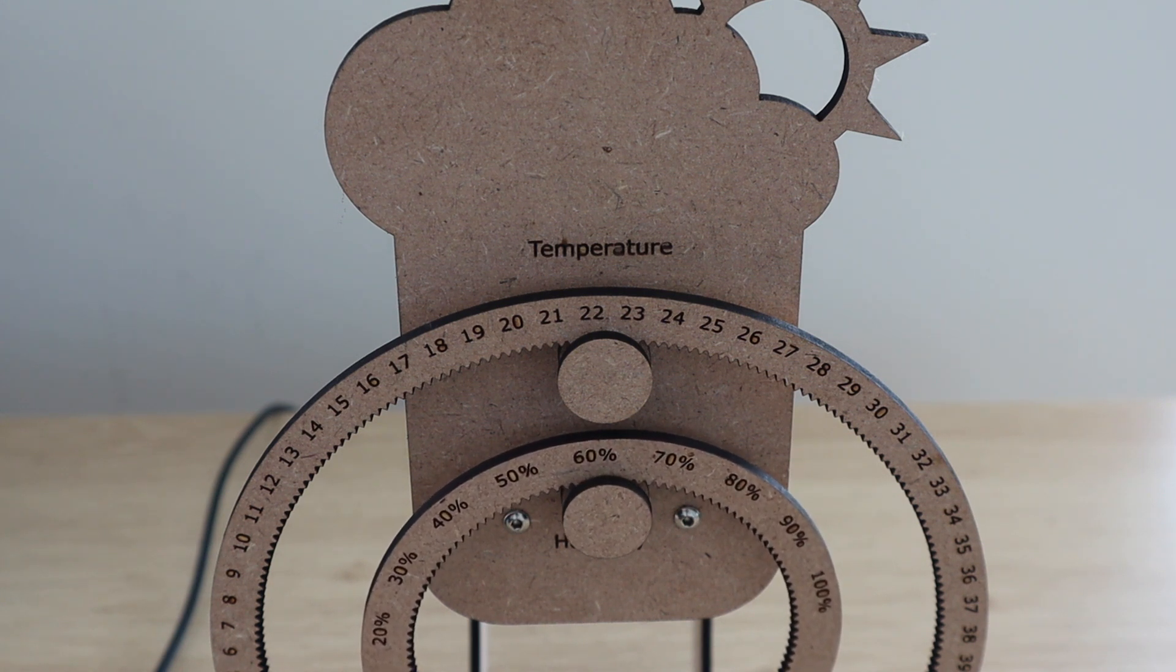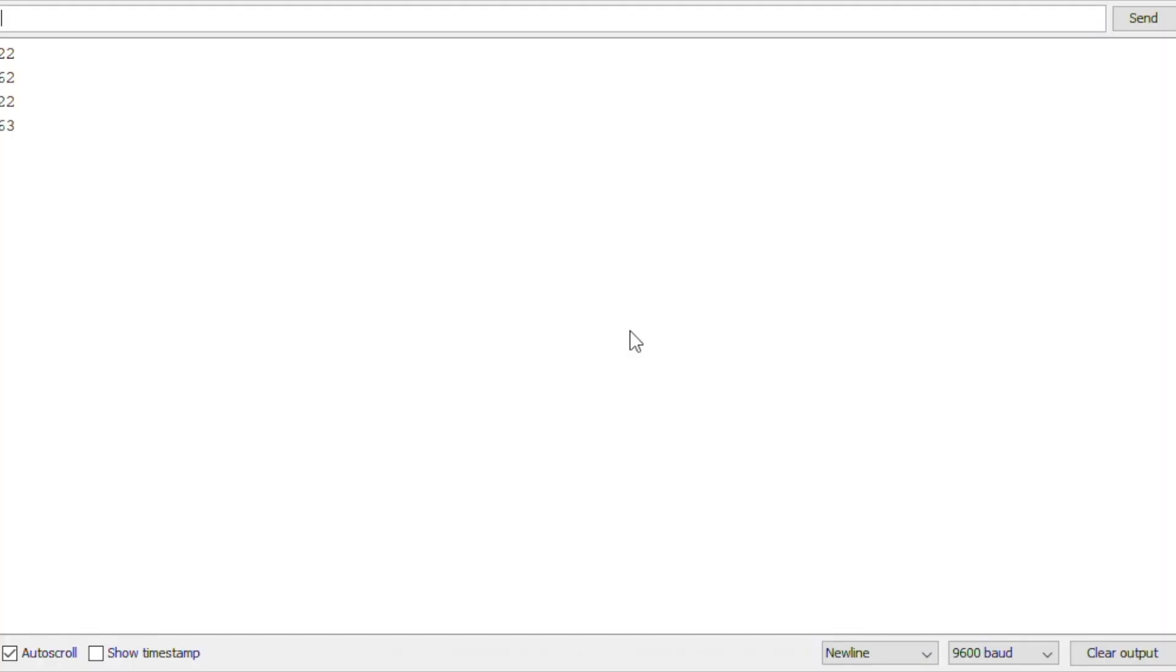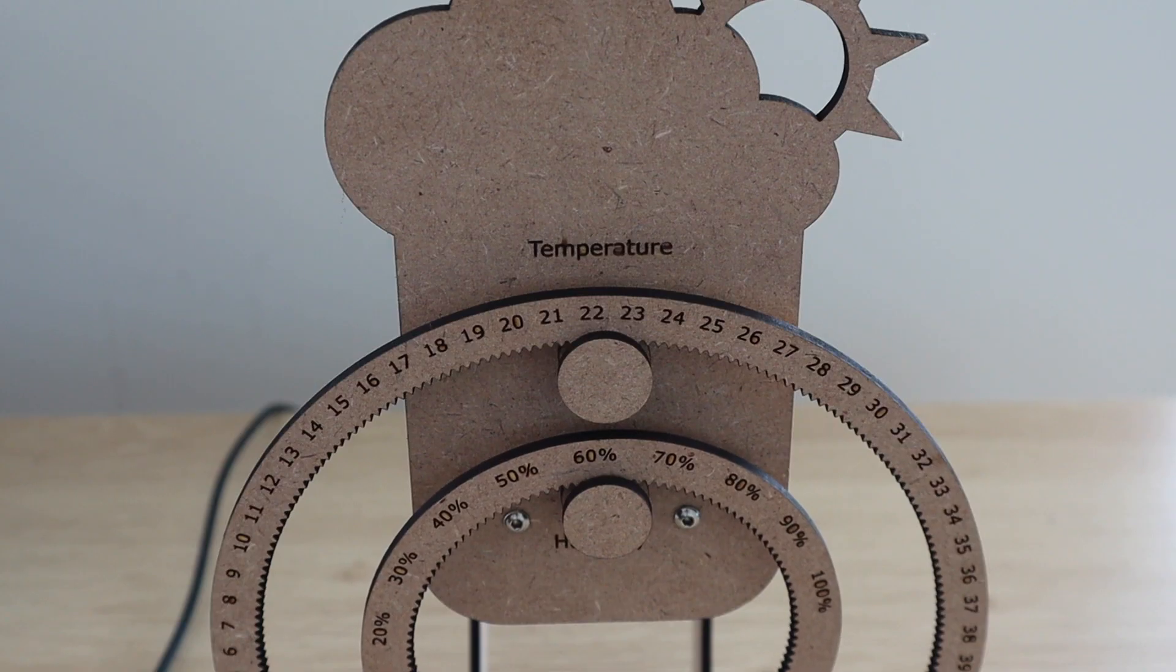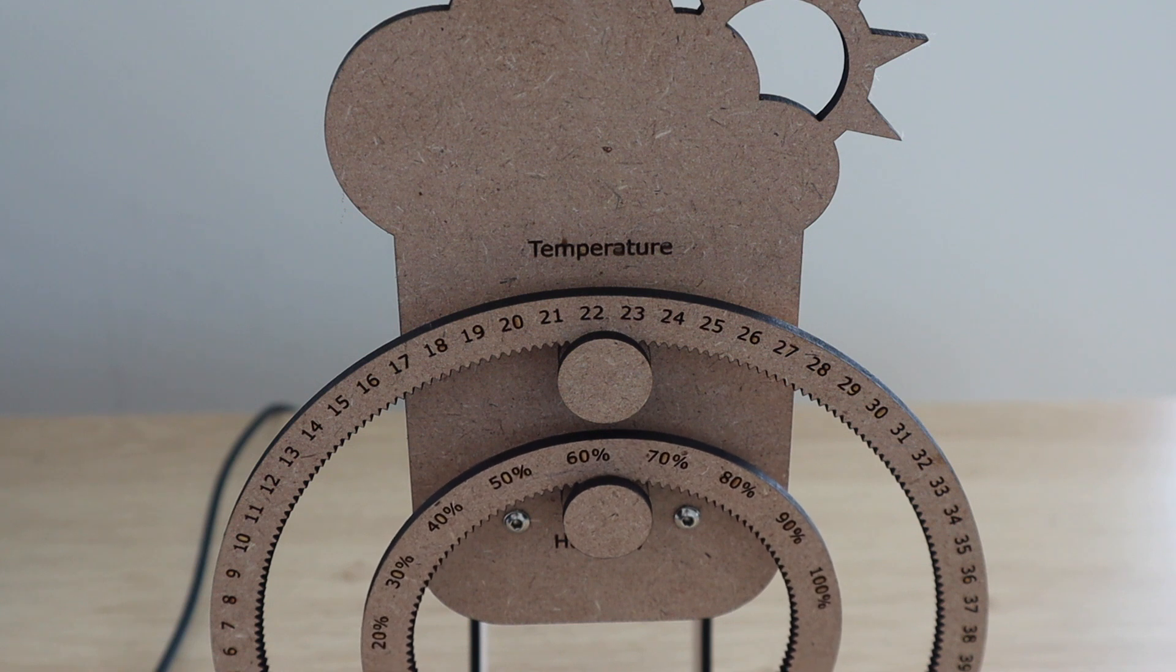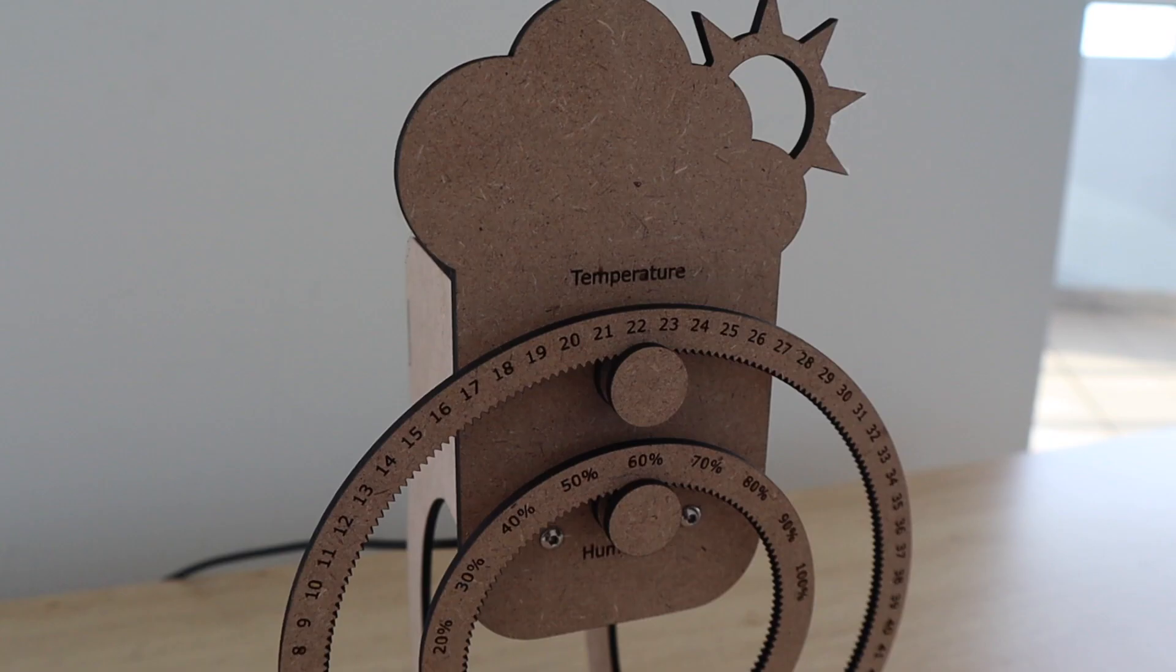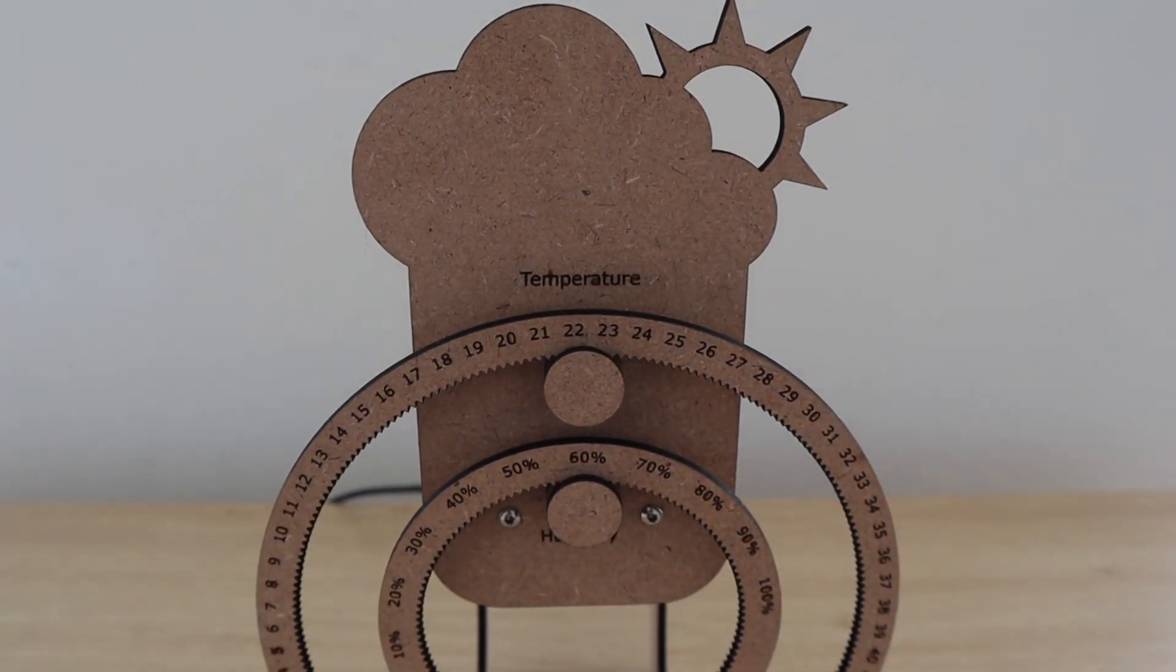Once the movement finishes, you should see a second set of values and the gears may move again. It usually takes a couple of minutes for the sensor readings to stabilize, and then you'll get more consistent data and less movement of the gears.